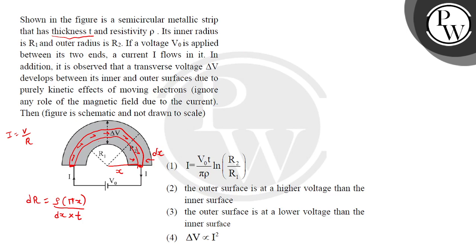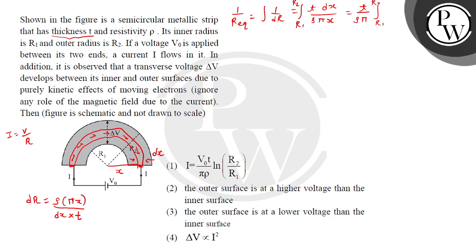Now all such strips are connected in parallel, because the voltage is constant between each strip and the current is distributed — that is a parallel connection. So to find R_equivalent, we integrate 1/dR. We integrate 1/dR, where the variable is x going from r1 to r2. So 1/dR = t·dx / (ρπx).